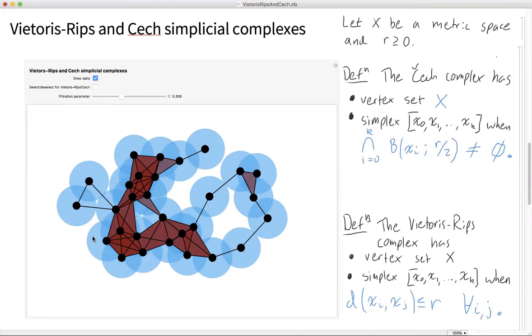Are they related to each other at all? I'll end by giving the following relationships. We have that the Čech complex of X at scale r using my r over 2 convention, which is why I chose it, is contained in the Vietoris-Rips complex at scale r.